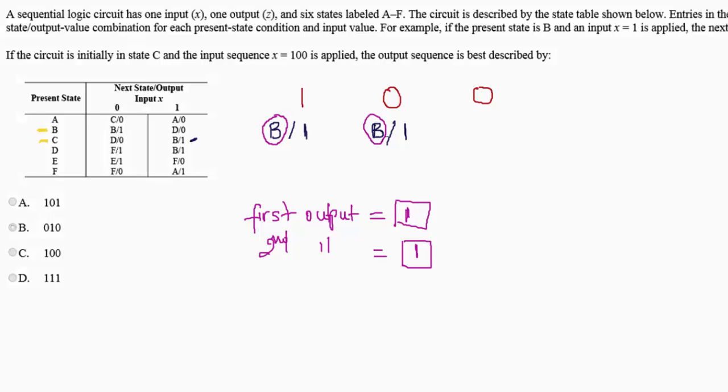All right, so my next state is also B after my output is one. So this next state is also B, so I'm also here. And my input is also zero. So I'm already, I'm also at B slash one. Okay, so I'm here at B slash one.